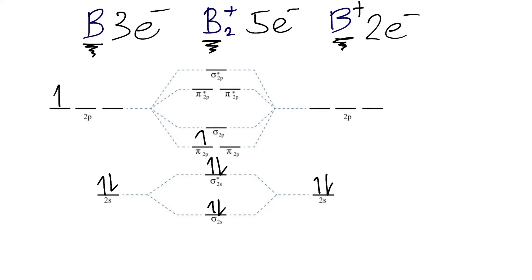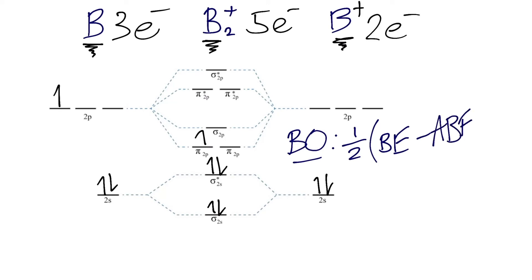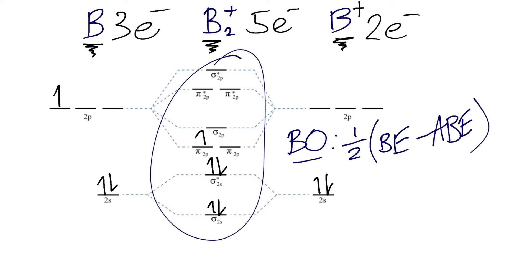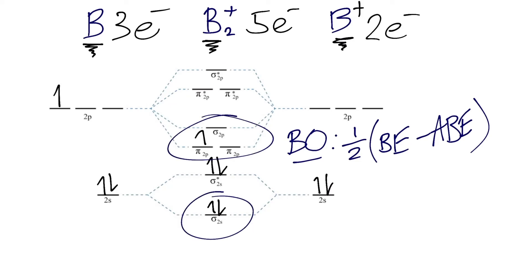Now that we have our completed MO diagram, we can look at the bond order (BO), which measures the stability or strength of a bond. Its formula is: one half times (the number of bonding electrons in bonding molecular orbitals) minus (the number of antibonding electrons in antibonding molecular orbitals). Bonding molecular orbitals are any without a star, and counting the electrons in those we have three — one in the π2p bonding MO and two in the σ2s.